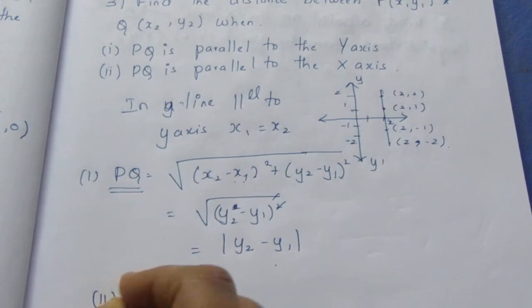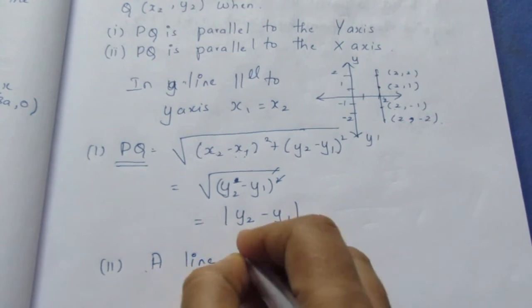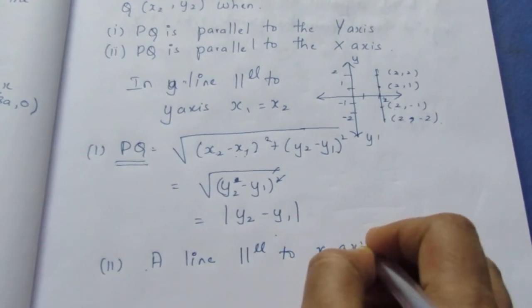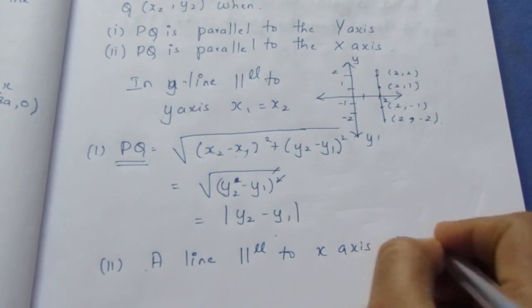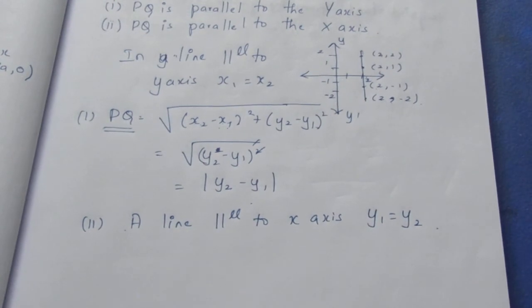Now for the second subdivision a line parallel to X axis. In this case we can say that y1 equal to y2. Y1 will be equal to y2.